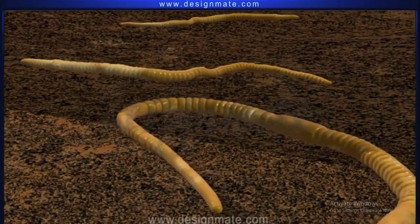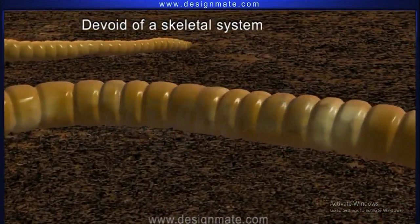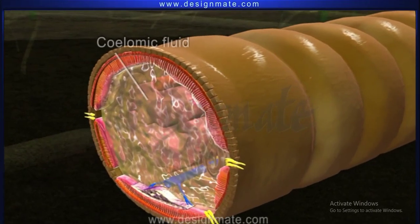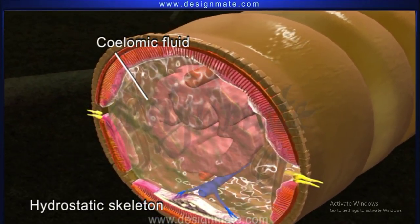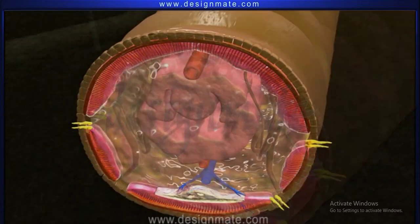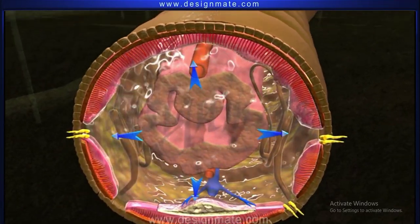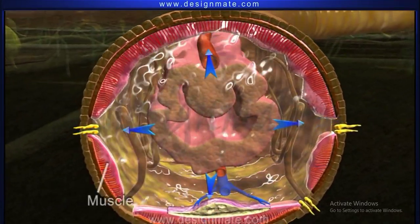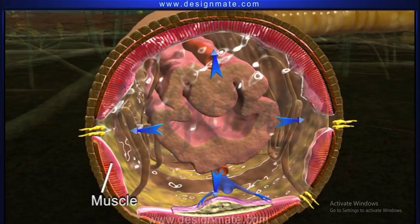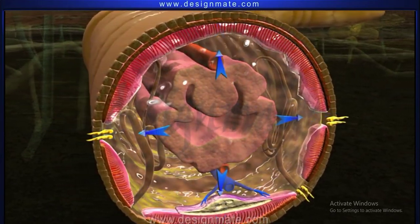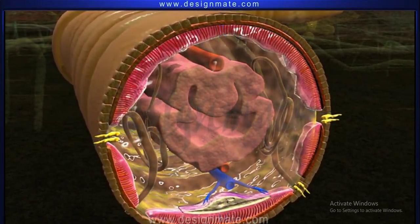These animals are devoid of a skeletal system. Coelomic fluid acts as hydrostatic skeleton. The pressure of fluid along with action of the muscles provide support to the body. Coelom with surrounding muscles is known as hydrostatic skeleton.